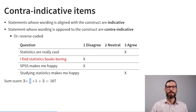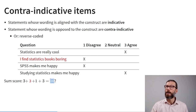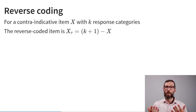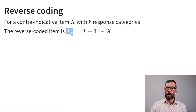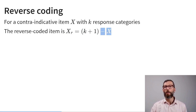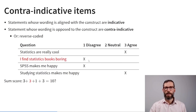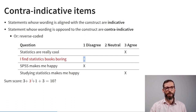Instead of adding +1 for this person's response to that contraindicative question, we add +3, making the sum score 10. In general, when reverse-coding categorical items for a contraindicative item x with k response categories, the reverse-coded item x_r equals the number of categories plus 1 minus the observed score. Here the scale maximum is 3 and the observed score is 1, so 3 + 1 − 1 = 3.